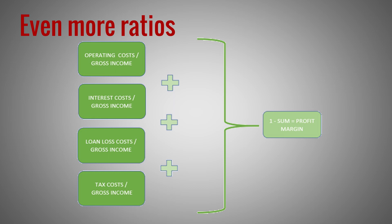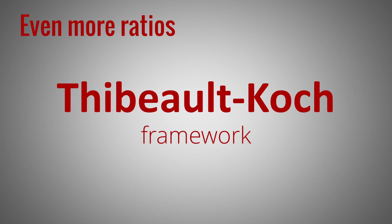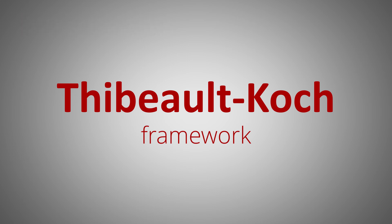Now we have a framework that analyzes the vital questions regarding bank performance: (1) How does the bank make money? (2) How does the financial institution manage its costs? Since the DuPont scheme only contains ratios, we can analyze and compare different financial institutions, no matter the size or nature of the banking business. We name this extension to DuPont the Tebow-Coach framework.